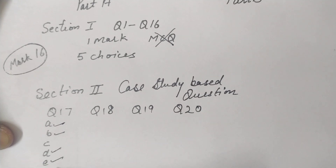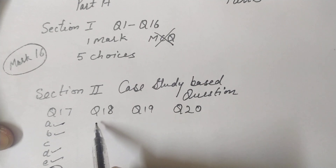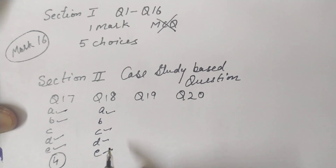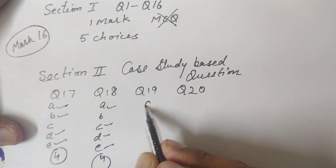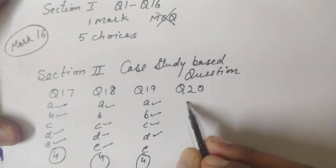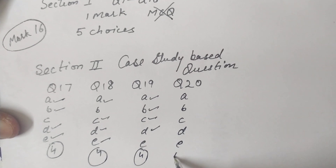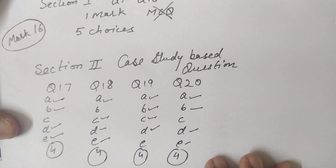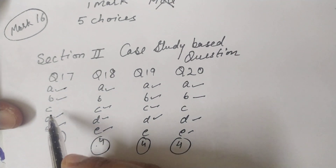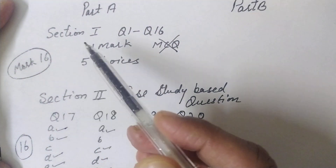Each case study question — 17, 18, 19, and 20 — carries four marks (attempt any 4 out of 5 sub-parts). So Section 2 totals 4+4+4+4 = 16 marks.